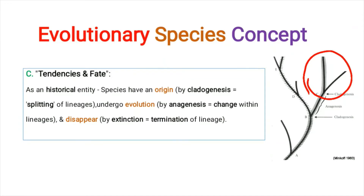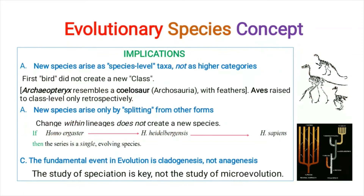We are discussing the origin and disappearance of species. New species originate by cladogenesis, which means splitting of a single lineage into two. Evolution also occurs by changes within a single lineage. Disappearance of species occurs by the extinction or termination of a lineage — meaning the end point of a particular lineage.